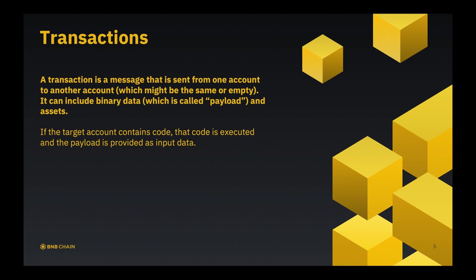Inside transactions, it can include binary data and assets. The binary data is called payload. Assets basically means you can store and send money through transactions. If the target account contains code, the code is executed and the payload is provided as input data. For example, if a smart contract implements a receiveEther function — the function that should be executed when it receives a transaction containing some assets — transacting to that account will trigger and execute that function.